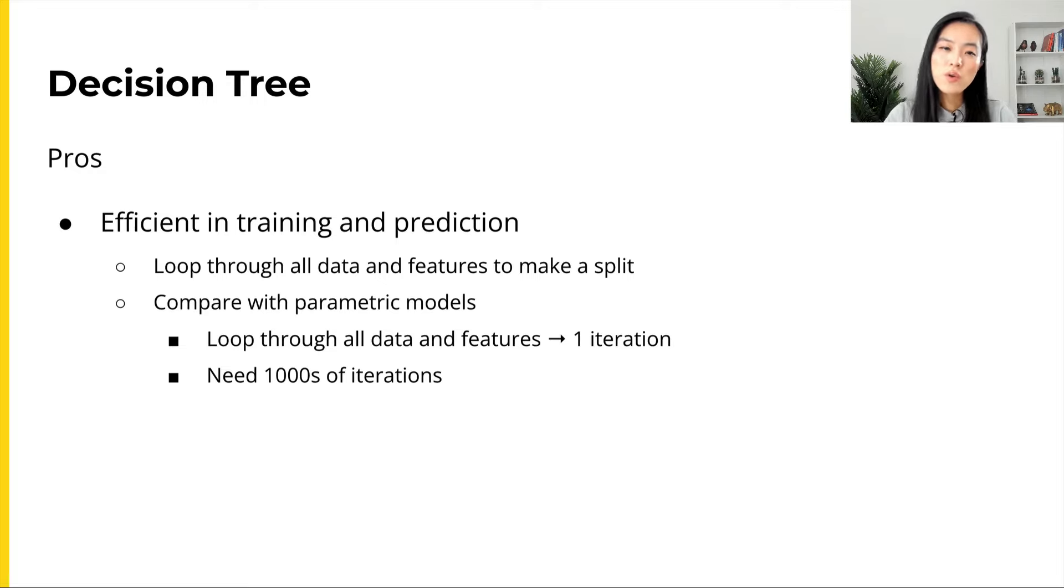In comparison, many parametric models start with some random guess of the values of a parameter. We need to loop through all the data points to make small adjustments to the parameter, which is counted as one iteration. We will need hundreds or even thousands of iterations to get the desired parameter for the model. So in that aspect, training decision tree is more efficient than most parametric models.